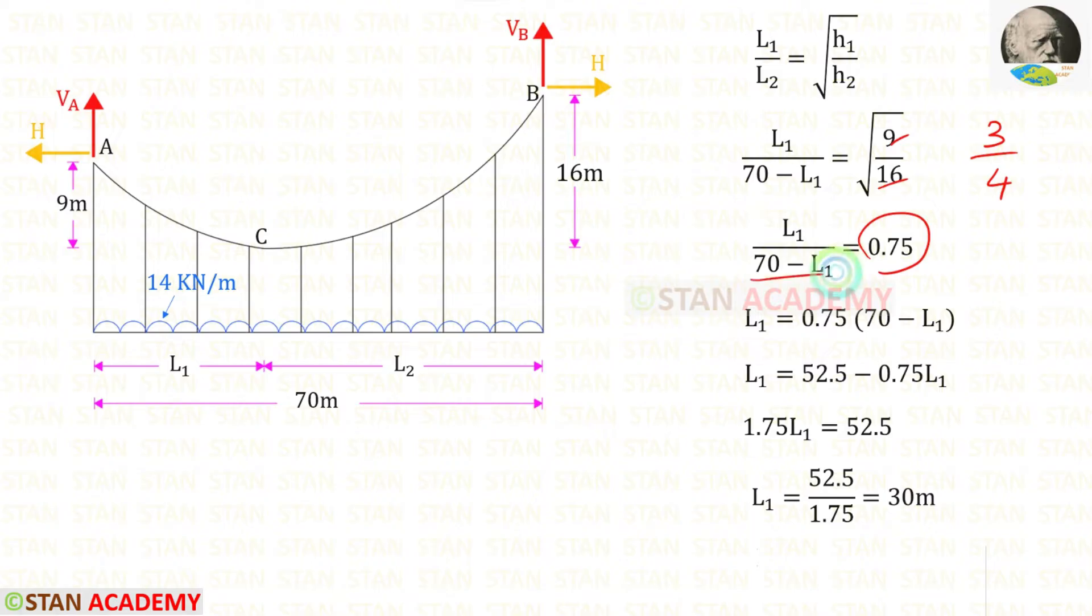Then we can take this term on the right side. We can multiply these two so that we will get this. We can take this term on the right side. So it will come as positive. 0.75 L1 plus L1. We will get 1.75 L1.